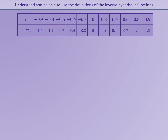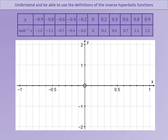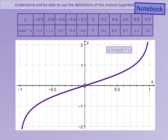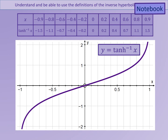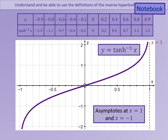Finally, we're going to consider inverse tanh of x. You'll remember that the y equals tanh x graph had horizontal asymptotes, so you may already expect that this will have vertical asymptotes. Therefore, we can only input values of x between minus 1 and positive 1. If we try to find inverse tanh of values greater than 1 or less than minus 1, we will get a calculator error because these values don't exist. So inverse tanh of x is again a reflection in the line y equals x, and this time it has vertical asymptotes at x equals 1 and x equals negative 1.